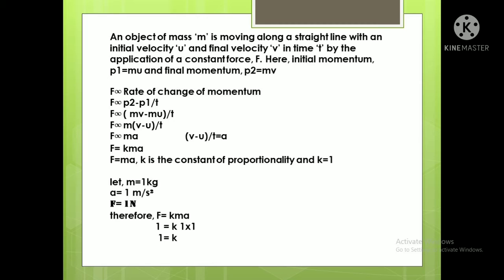So initial momentum is mu and final momentum is mv. The rate of change of momentum is directly proportional to F. Rate of change = (p2 - p1) / t = (mv - mu) / t. Taking m common: F ∝ m(v - u)/t. Since (v - u)/t equals acceleration a, we get F ∝ ma.